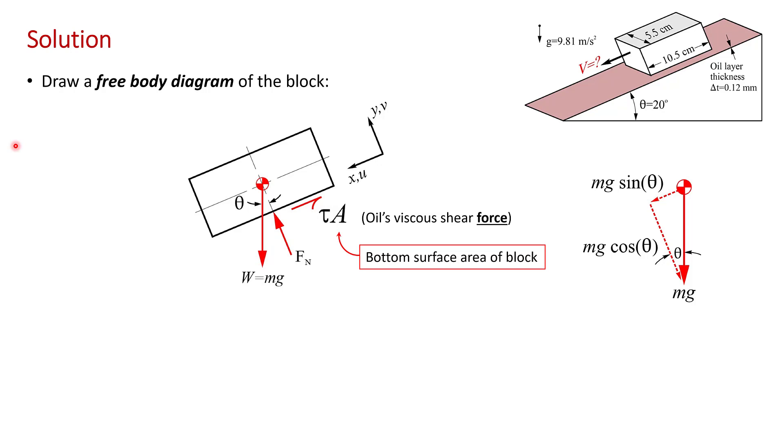Notice that the viscous shear force on the block acts to oppose motion. It acts to slow down the block, so the more viscous the oil is, the slower the block is going to slide.